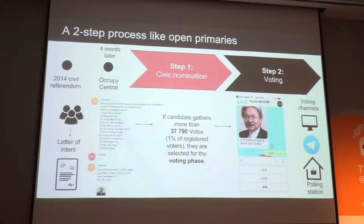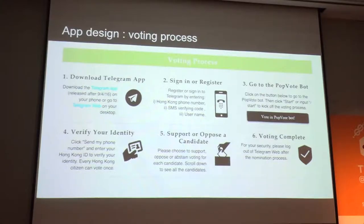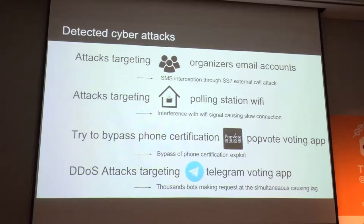Here you can see a screenshot of how the voting worked. It was both a physical and digital process: you could vote on Telegram, vote on your computer, and there were polling stations around the city so everyone could participate. People would have to download the app, then provide their Hong Kong phone number, Hong Kong ID card, and Telegram username. If their identity was verified, they could support or oppose a candidate.